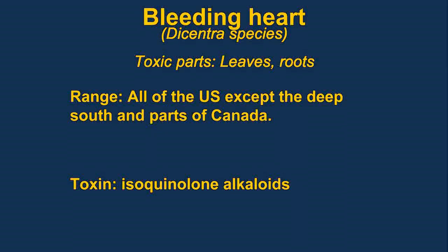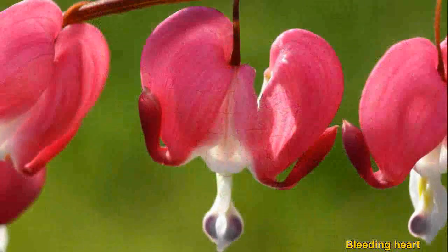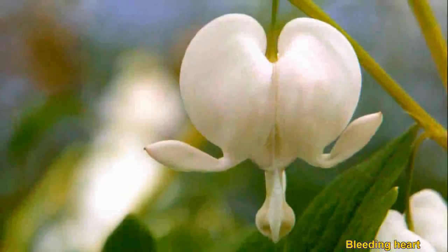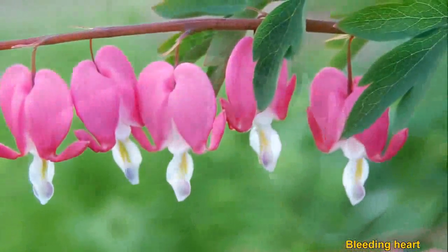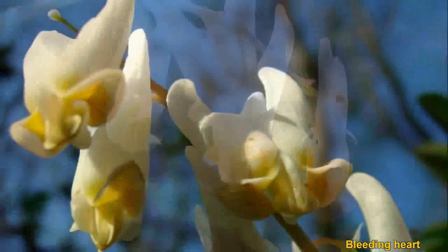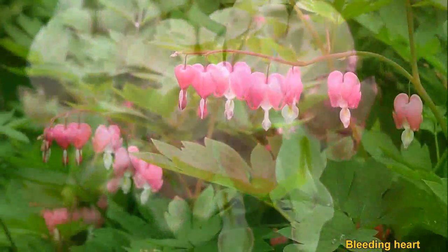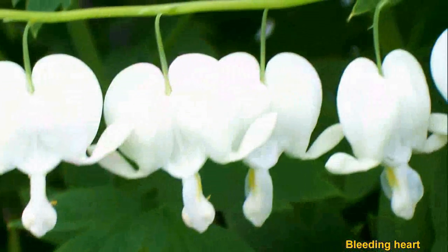Bleeding heart, or dicentra, are found throughout much of the United States. They contain a toxic isoquinoline that causes convulsions. The plants can also cause dermatitis. They have been known to cause the death of cattle. They are also known as Dutchman's britches or squirrel corn.